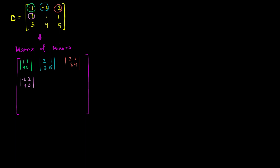Then we have this center element. Get rid of the middle row and middle column. You're left with the determinant of negative 1, 2, 3, 5.